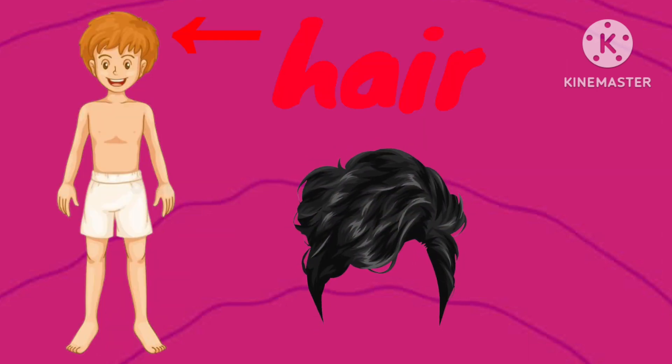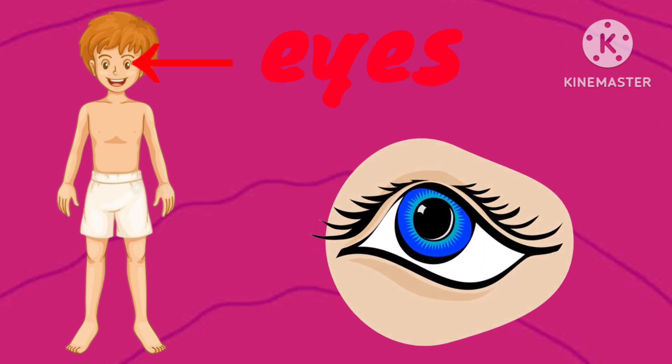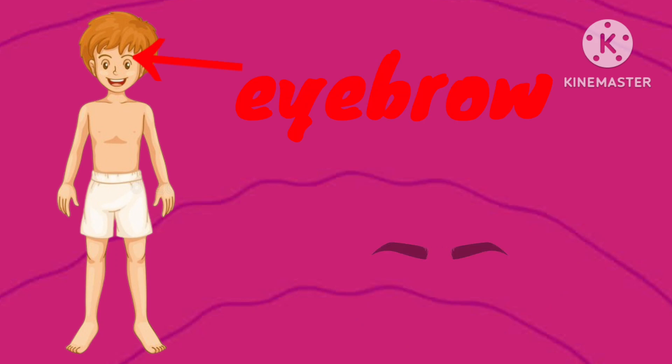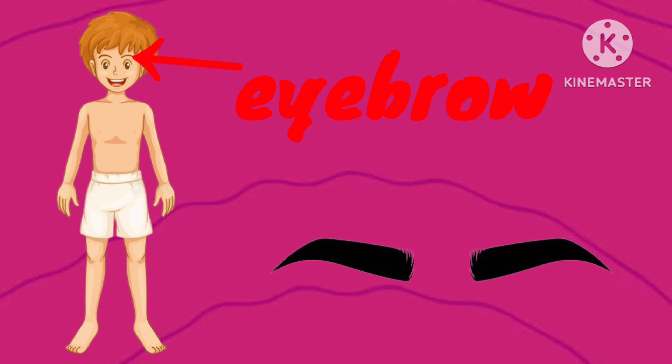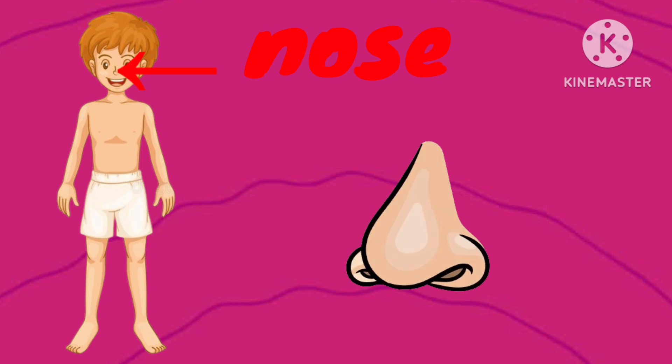Hair. Bal. Eyes. Aankhien. Eyebrow. Bhoen. Nose. Naak.